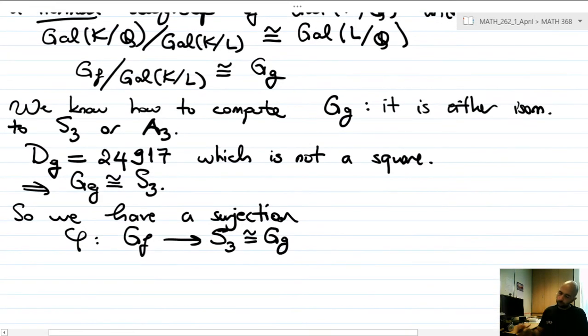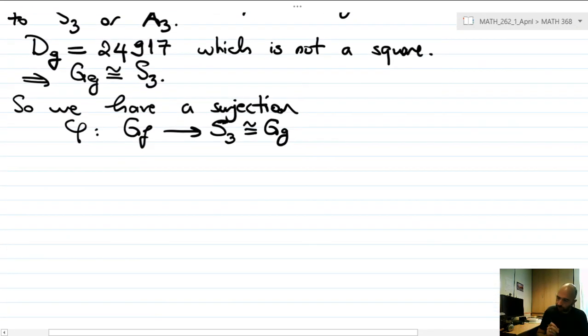Now it might be difficult to conclude by just looking at the orders here, but if we look at the action of this homomorphism on the roots, then it's much easier. So G_f is either - remember - generated by in the first case (1 2 3)(4 5 6), (1 2)(4 6), and (1 2)(4 5), and (1 4)(2 5), this is one possibility.